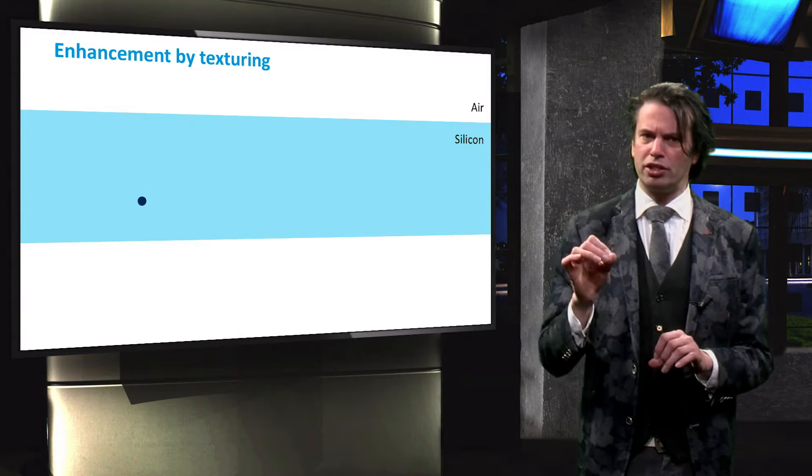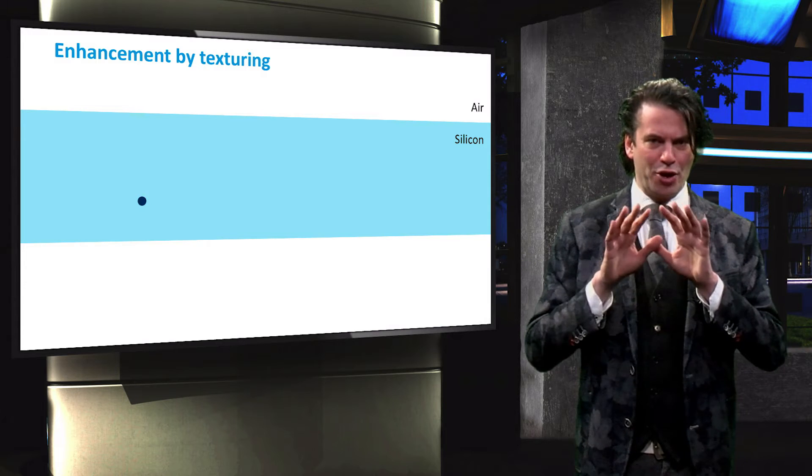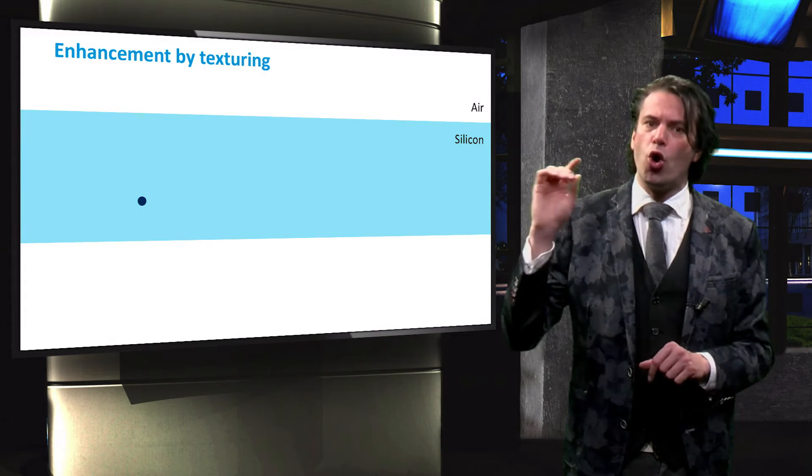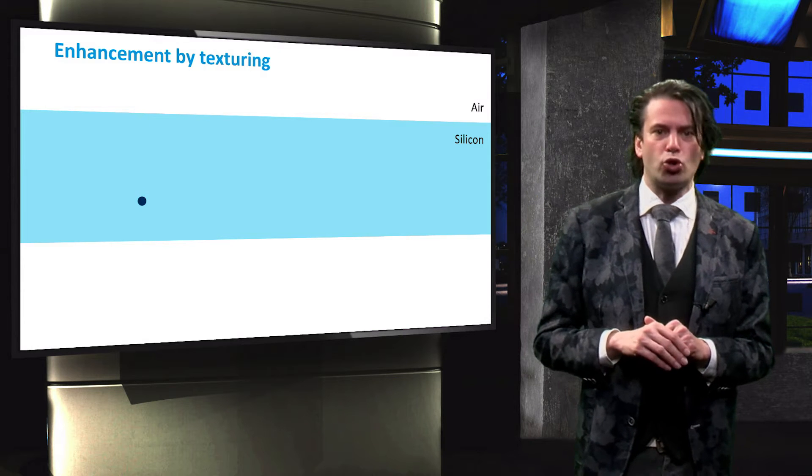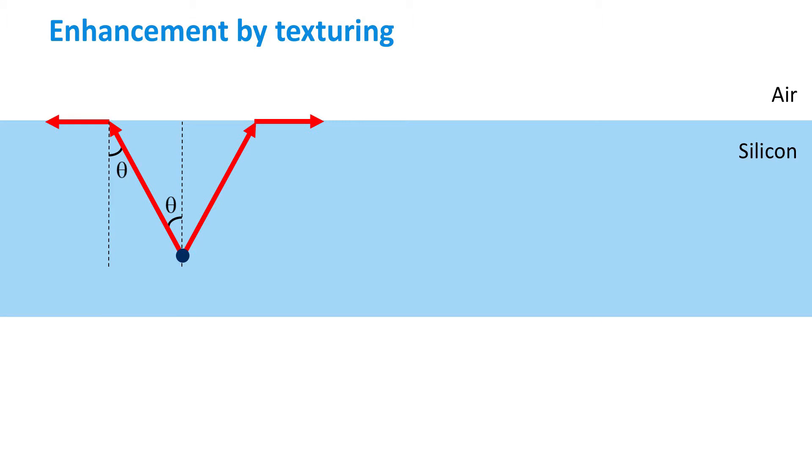We first consider the case where the cell has no back reflector and no texturing. We assume the light to be incident from only one side and the absorbing layer to be surrounded by air. We indicate the maximum angle under which light can reach our point by theta. Theta equals in this case the critical angle for total internal reflection, as we saw in the discussion of Snell's law.